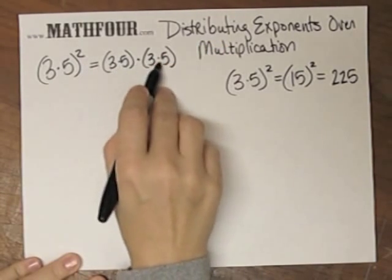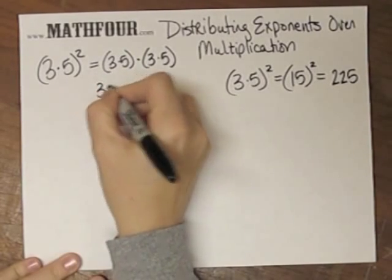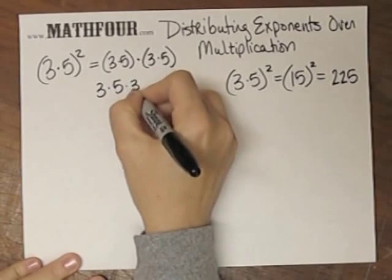Well, when I have things multiplied all in a row like this, these parentheses are useless. So this is really 3 times 5 times 3 times 5.